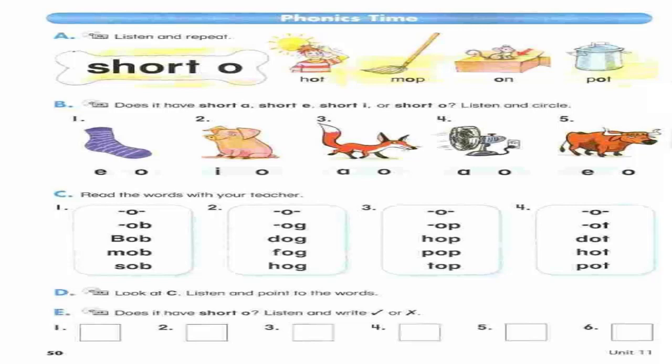Pot. B. Does it have short A, short E, short I, or short O? Listen and circle. Number 1: sock. Number 2: fox.